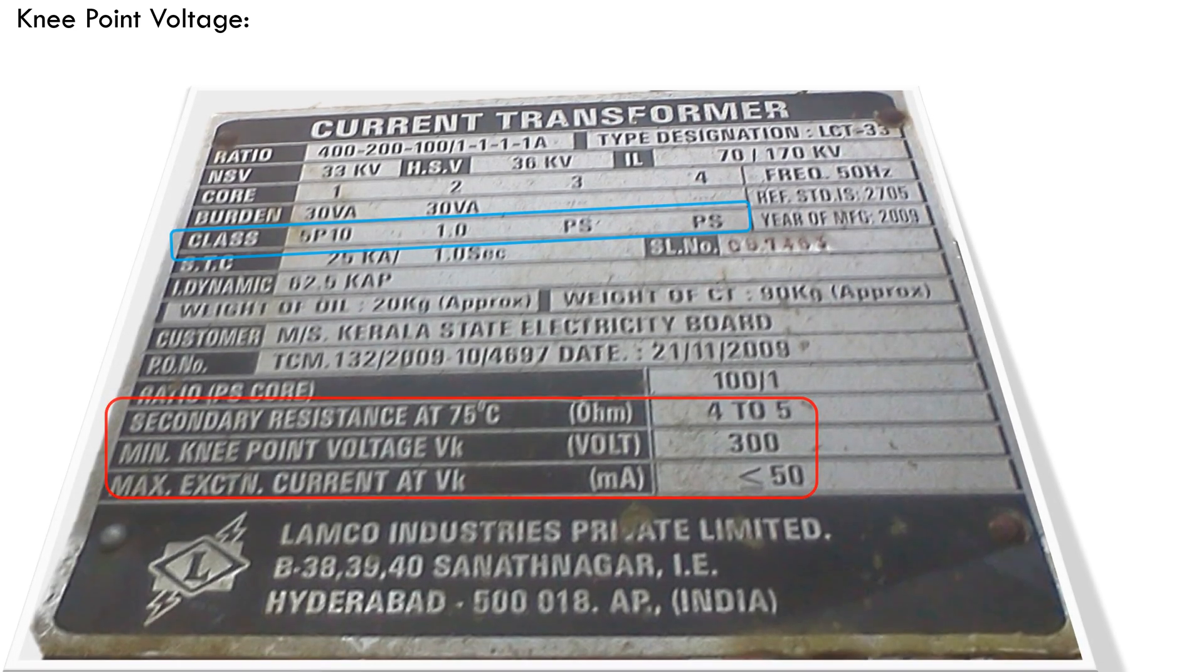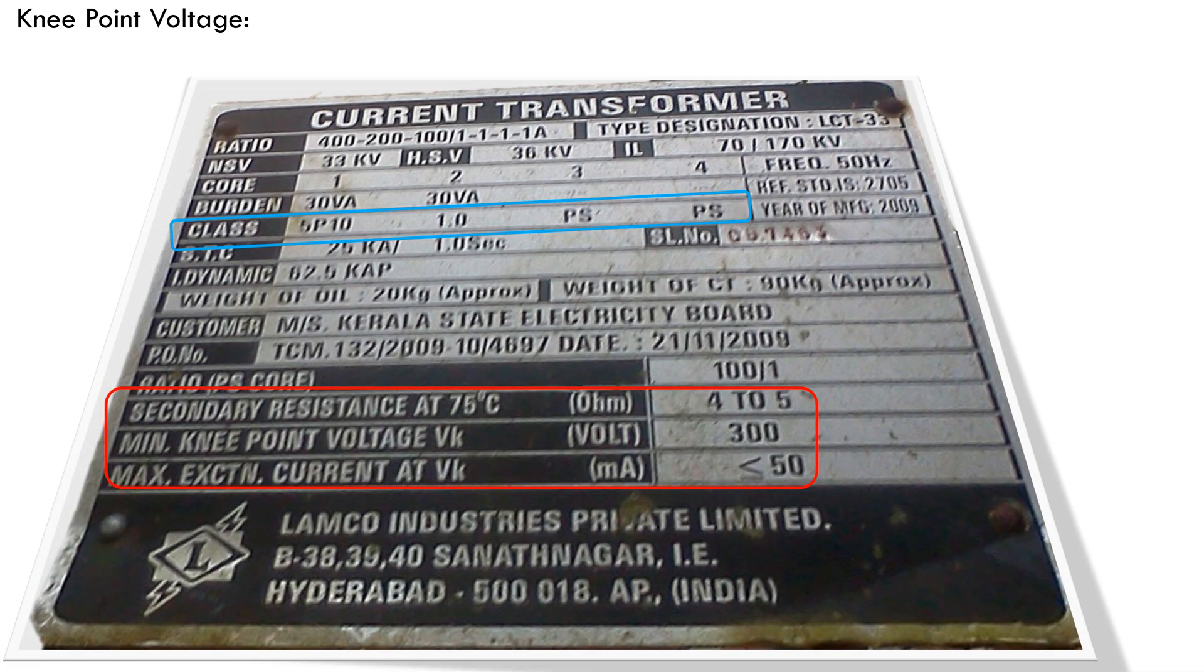Current transformer voltage can be obtained from the nameplate details of protection class CTs. However, it is to be verified during commissioning of the new CTs. There are two basic types of CT core, metering core and protection core. The basic difference between these two is for measuring core, the limits are well defined. But, protection cores have to operate over a wide range of currents. So, their characteristics must be different.